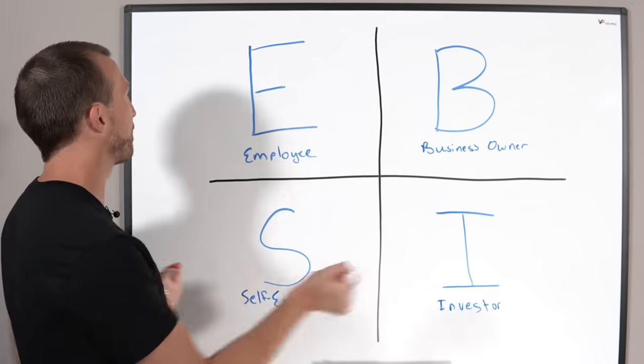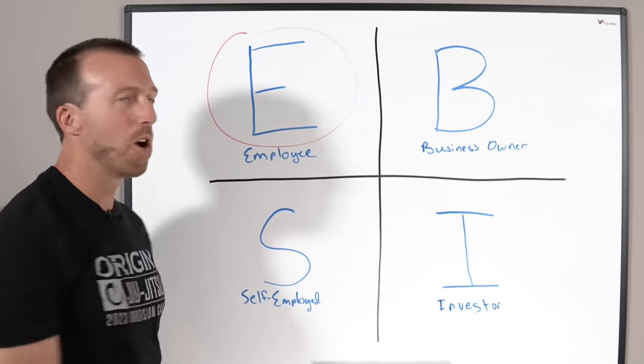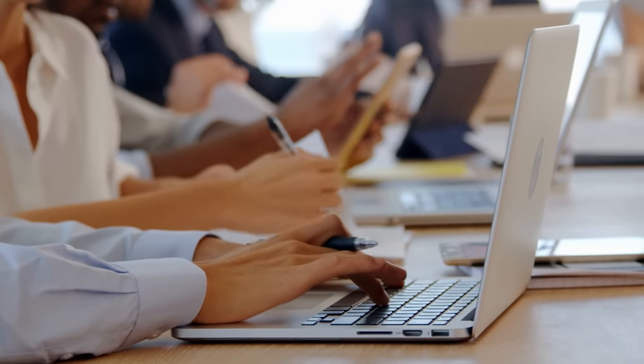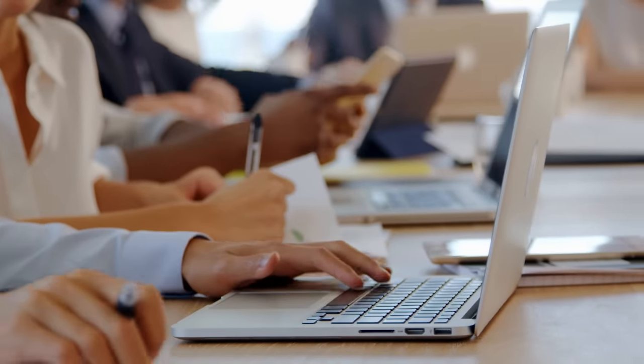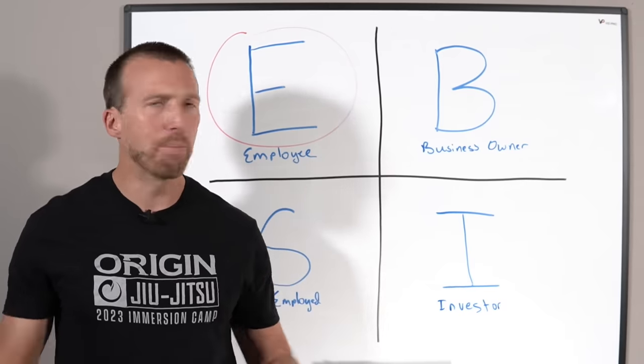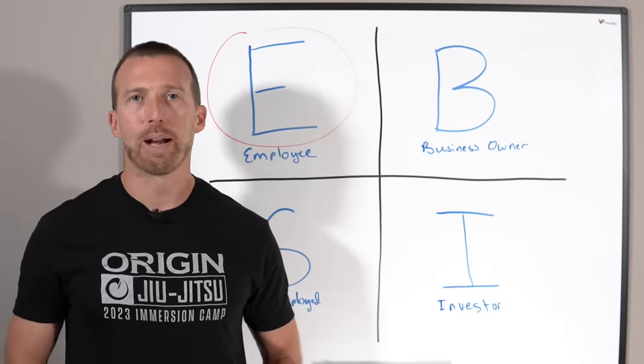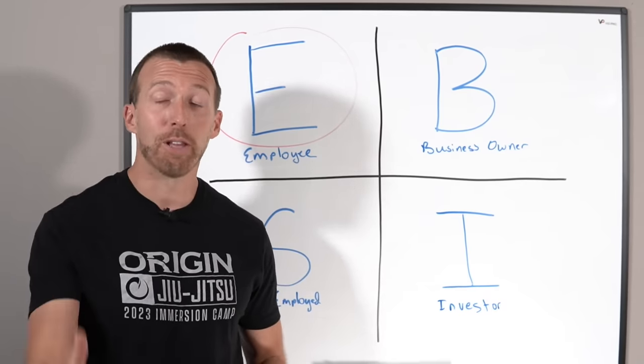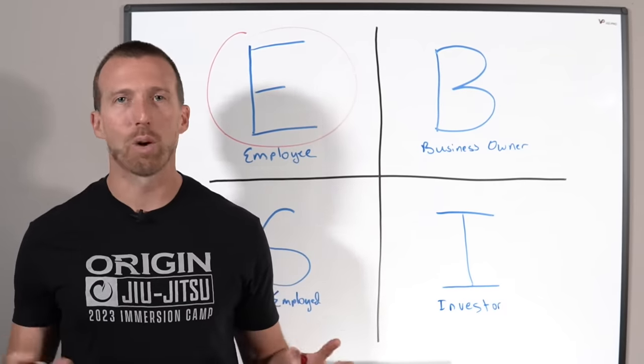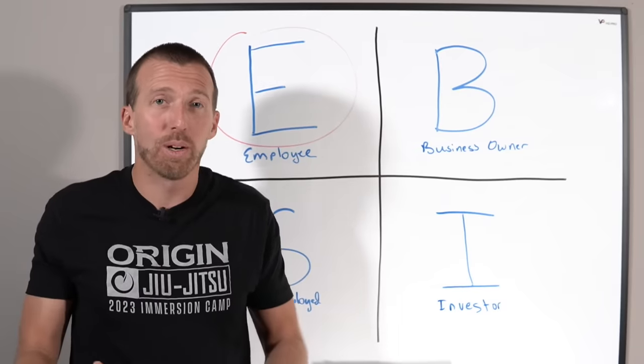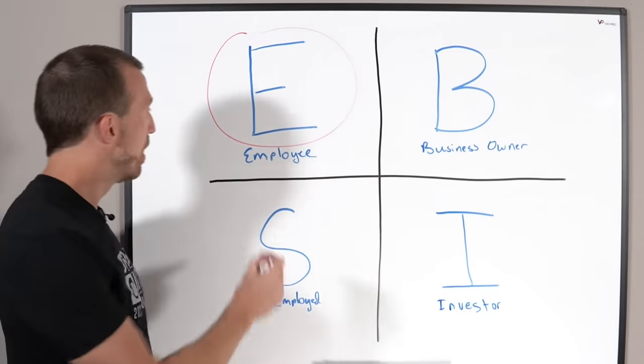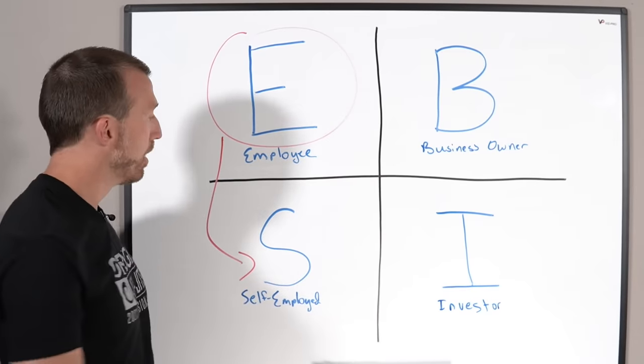So first off, employee. Most of us start off over here in the employee quadrant. We have a full-time job. Maybe we make a lot of money, maybe we don't, but we earn our money trading time for dollars. Now we start investing in real estate. We say I'm going to go invest in real estate, I'm going to start buying some houses. Let's talk about flipping houses or even being a full-time real estate agent or a wholesaler or a landlord that also manages their own properties. You do any of those things, you're immediately jumping all the way in here to the S quadrant.